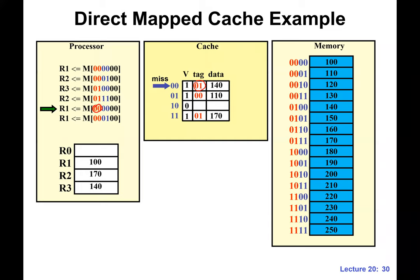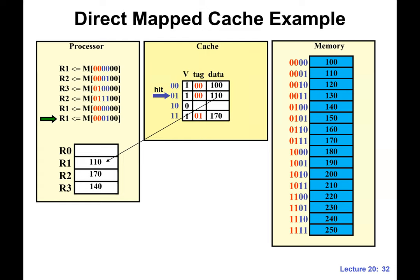The last read is finally a hit. We have seen this address before and it was not evicted. The valid bit is one, and the tag matches. These two match, so we get a cache hit.